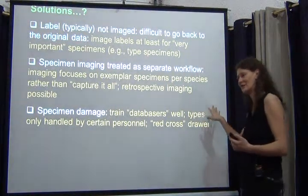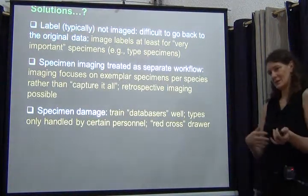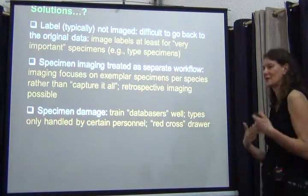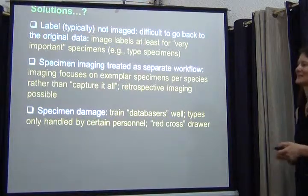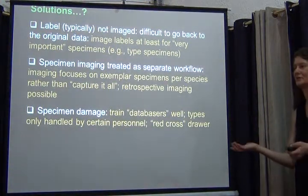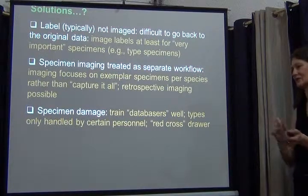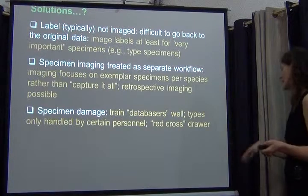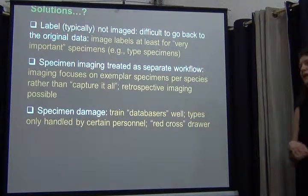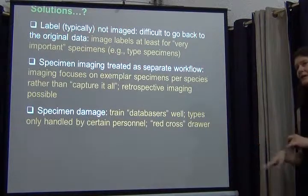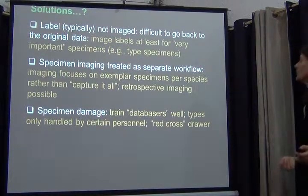For type specimens, we are fairly restrictive — we don't have them handled by untrained or semi-trained personnel. It would typically be grad students or myself dealing with types. We also have what we call a red cross drawer. If something goes wrong — a leg falls off, an antenna falls off, or an entire specimen breaks apart, which happens if someone puts a big pin through a very small specimen — we ask undergrad students to transfer them into a separate drawer, and then a supervisor takes care of repairing the specimen. It happens, although not as often as we would have expected. People are generally doing a better job than we thought.